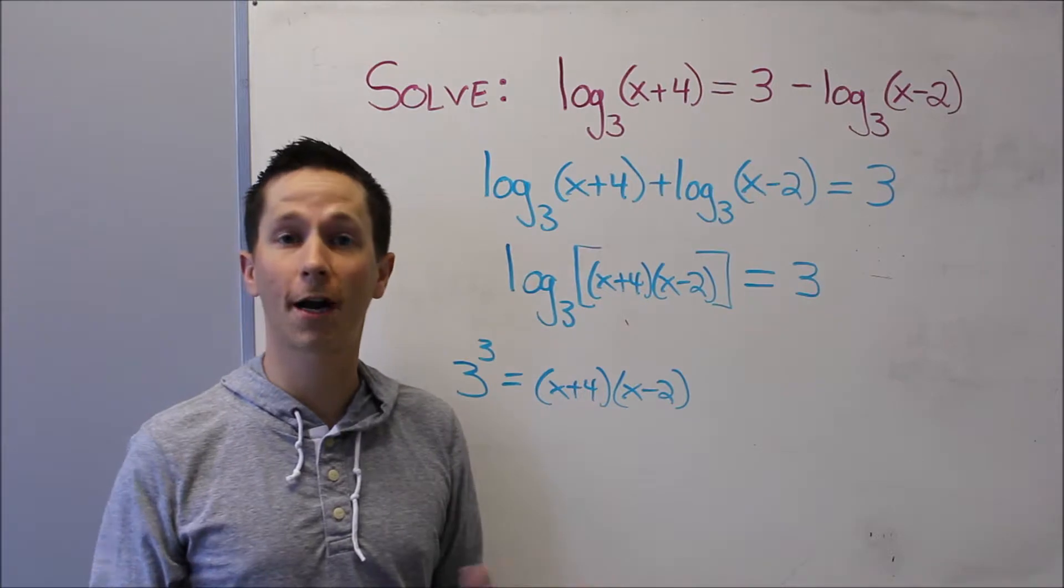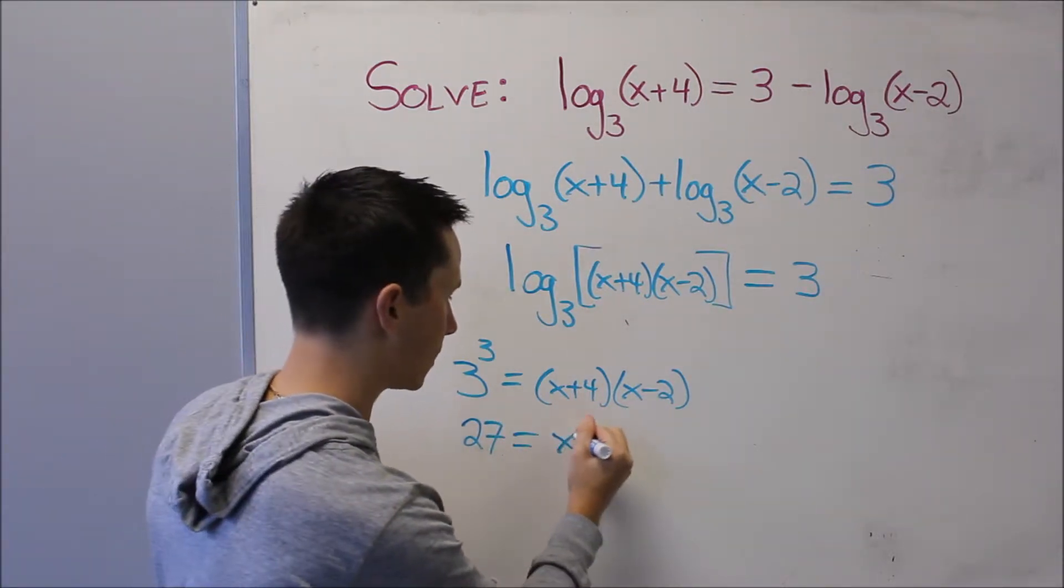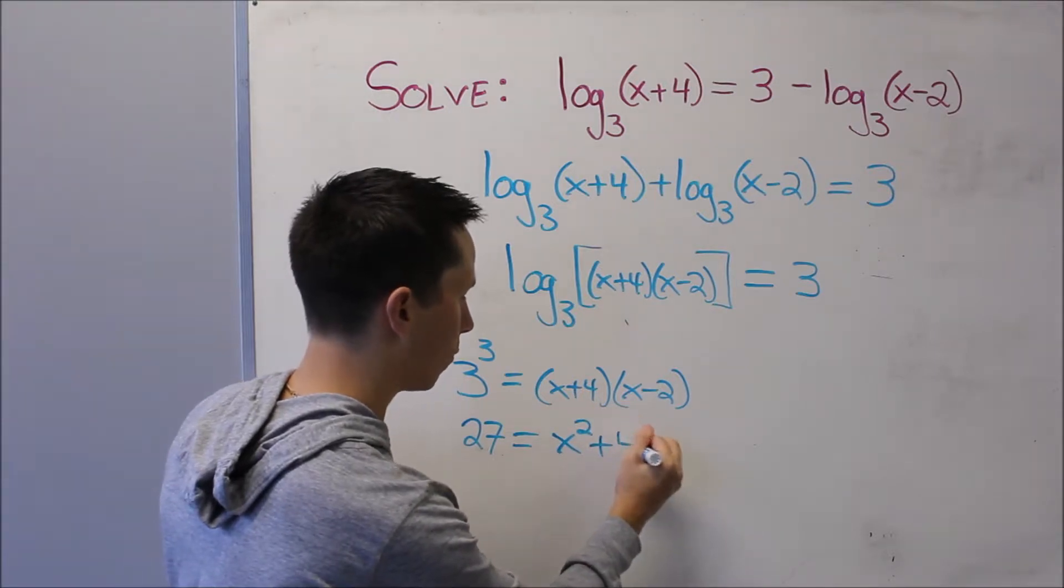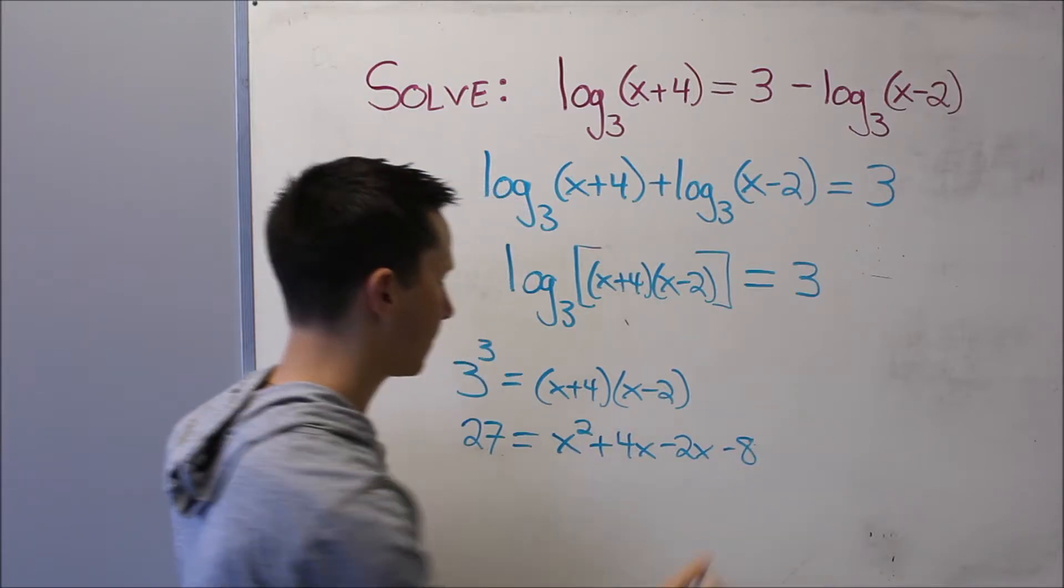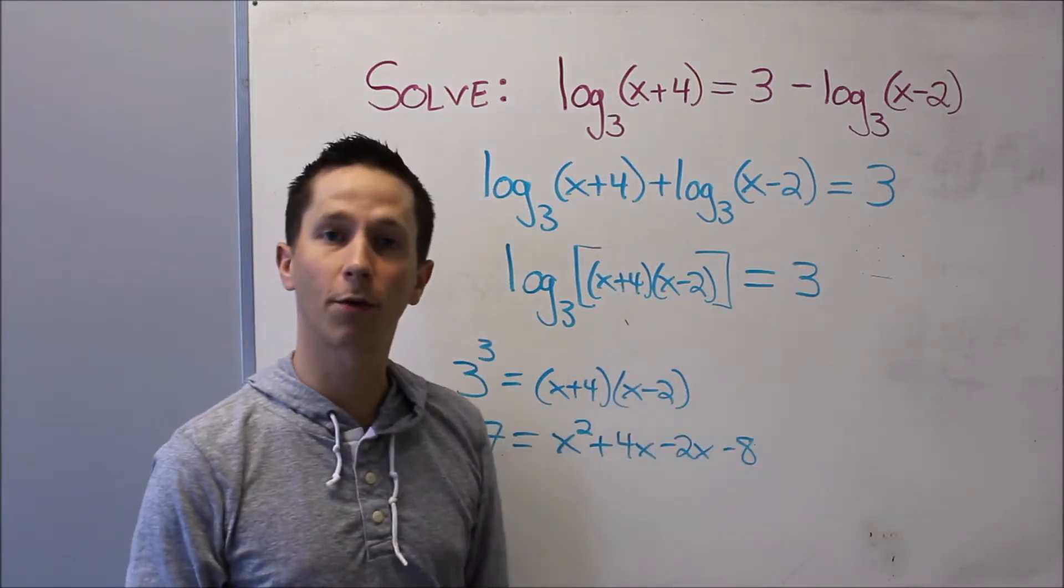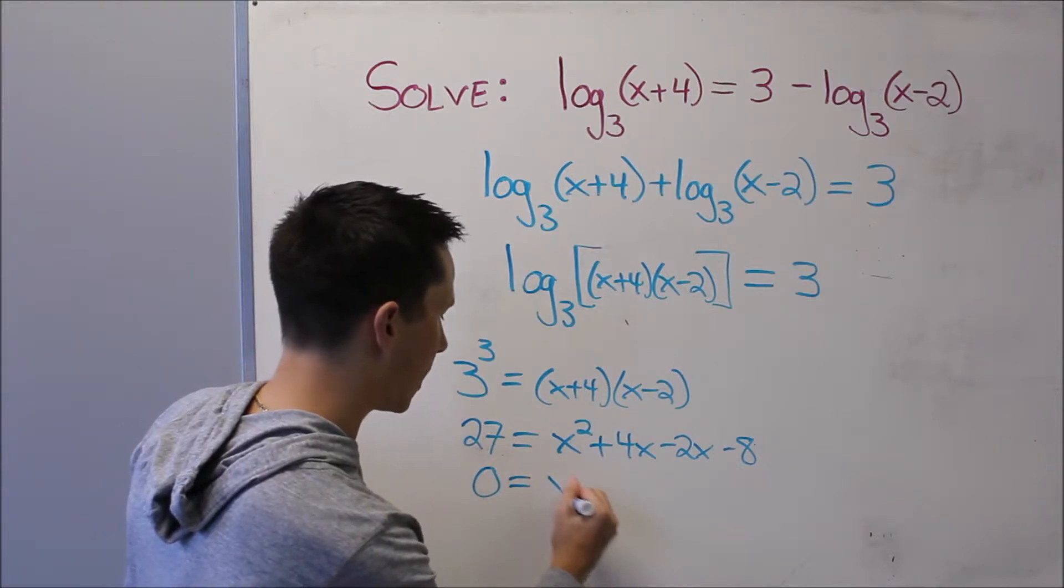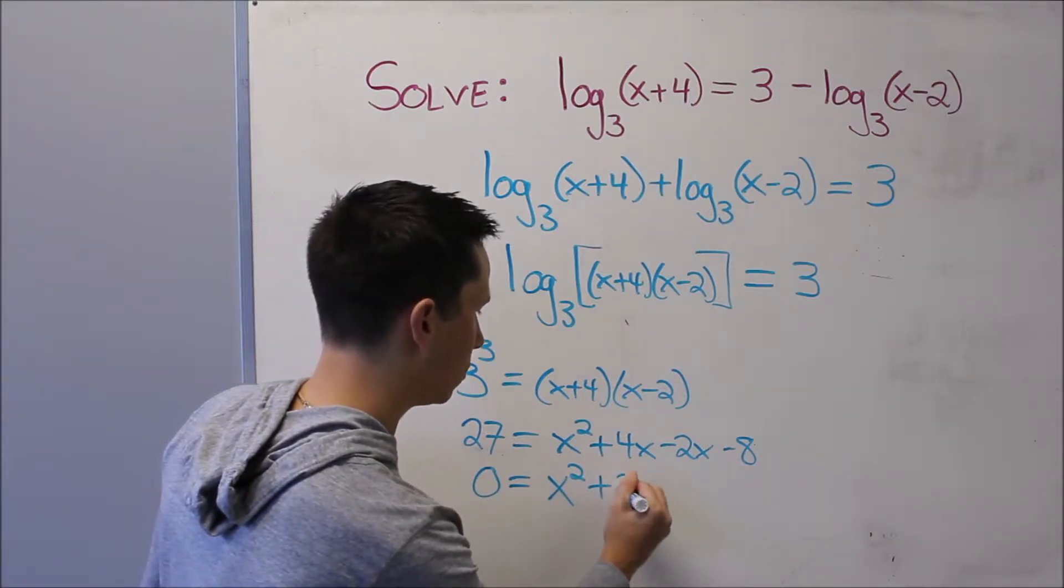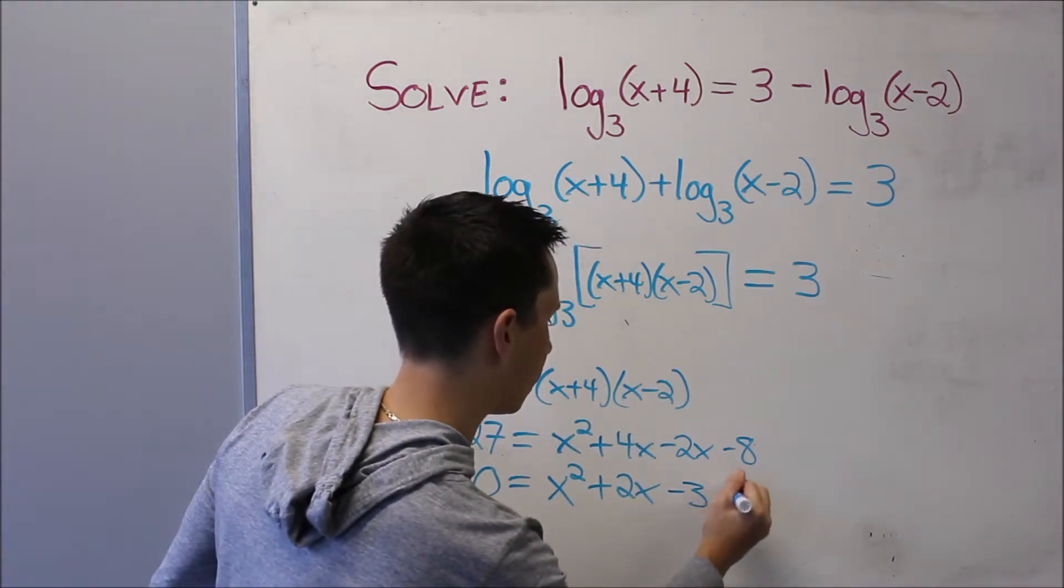This is an easy quadratic that we're really good at solving. This is 27. I'm going to expand this, so it's x squared plus 4x minus 2x minus 8. If I bring everything to the right side, because it's a quadratic, I'll get 0 equals x squared plus 2x minus 8 minus 27, which is x squared plus 2x minus 35.